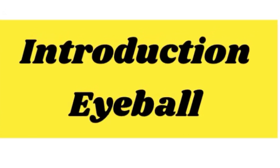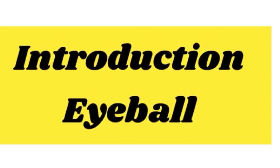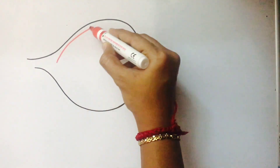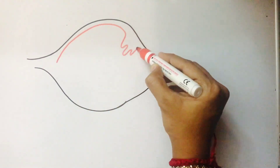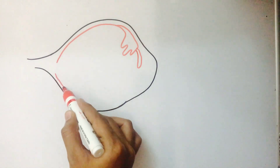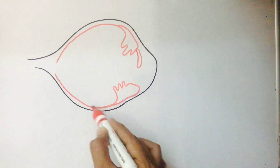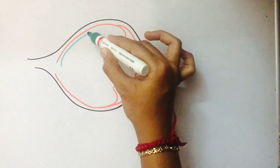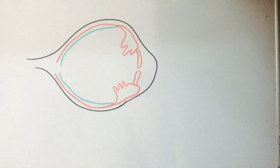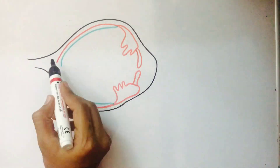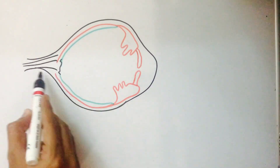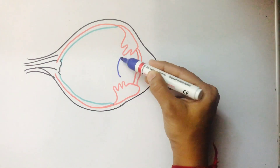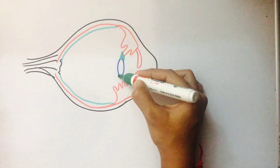Introduction to the eyeball. The three layers are: the outer fibrous layer - sclera and cornea; the middle vascular layer - choroid; and the innermost layer called retina, which is the nervous layer. This is the optic disc and optic nerve.